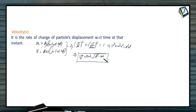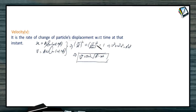One more thing: if you make a graph between x and v, it will be an elliptical kind of graph, as you can clearly see. That is about velocity.